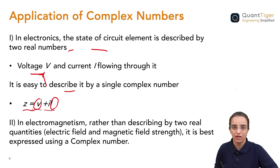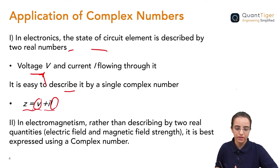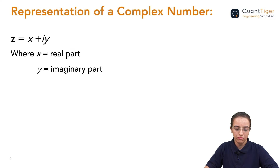Similarly, in electromagnetism, the electric field strength and magnetic field strength — instead of describing them separately, it is helpful to describe them together using the complex number. That's how we can use complex numbers in the field of electronics, electromagnetism, or in any other application of physics.